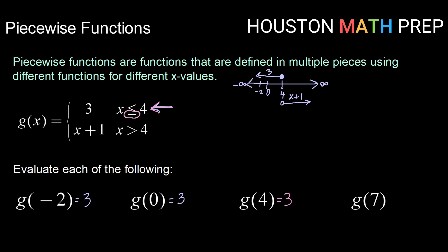And last but not least g of seven. Taking a look at where seven falls on our number line, seven would fall somewhere over here. So we're now going to use this second piece since now we are above four. And get that g of seven says to replace all the x values with seven. So that's seven plus one or eight. So g of seven equals eight.